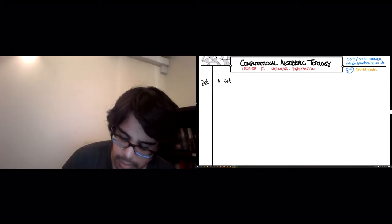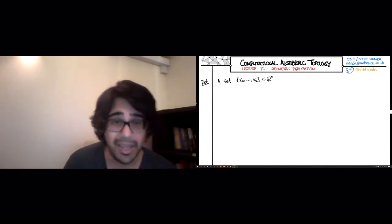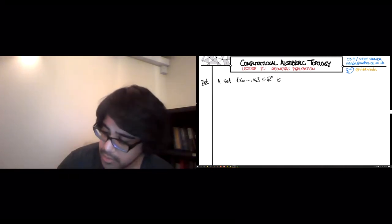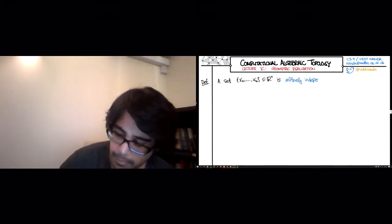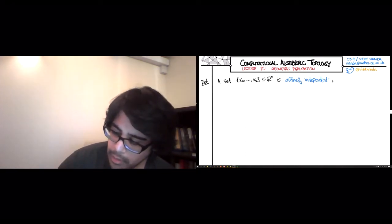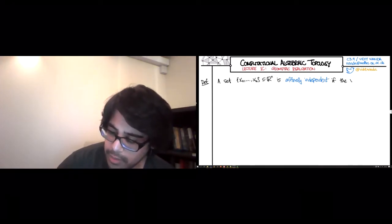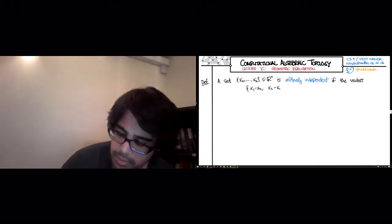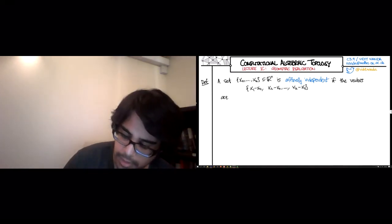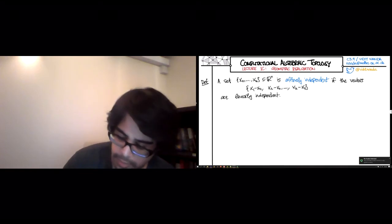A set x0 through xk of points in Rn, which is the standard Euclidean space, is affinely independent if the vectors x1 minus x0, x2 minus x0, all the way to xk minus x0, are linearly independent in the usual sense. So that's the first definition.